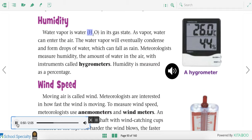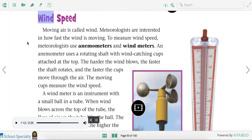Water vapor is water, H2O, in its gas state. As vapor, water can enter the air. The water vapor will eventually condense and form drops of water, which can fall as rain. Meteorologists measure humidity, the amount of water in the air, with instruments called hygrometers. Humidity is measured as a percentage. Meteorologists also measure humidity. Humidity is how much water is in the air.